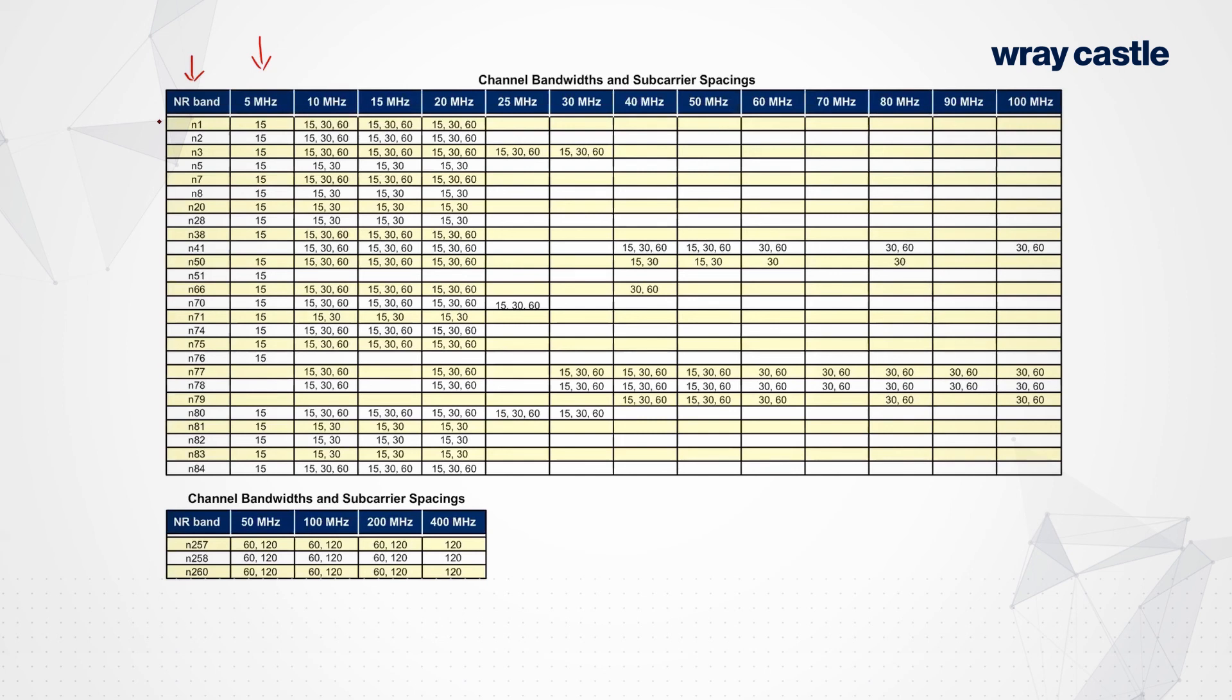The general thing that you will see is that up to about 50 MHz, this is a bit of a generalization, but up to about 50 MHz, you can use either 15, 30, or 60 sub-carrier spacing, generally speaking. Above 50 MHz of channel bandwidth, you can only use 30 or 60 sub-carrier spacing in frequency range 1. You'll notice in frequency range 2, this one down here, we support 60 or 120, for 50, 100, 200, and 400 MHz channel dimensions. So yeah, there are some restrictions. You can't just do whatever you want, whichever frequency band, there are some restrictions here.